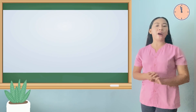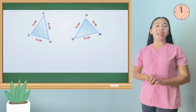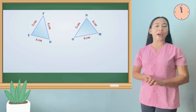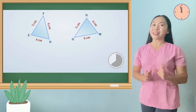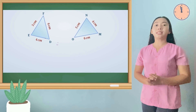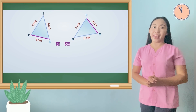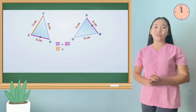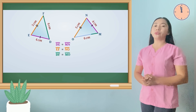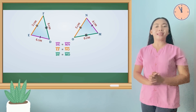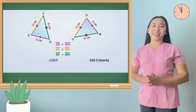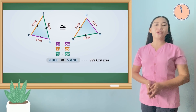We have here two triangles, triangle DEF and triangle MNO. In triangle DEF and triangle MNO, side DE is equal to side MN, side EF is equal to side NO, and side DF is equal to side MO. Their corresponding sides are equal. So, triangle DEF and triangle MNO are congruent triangles.